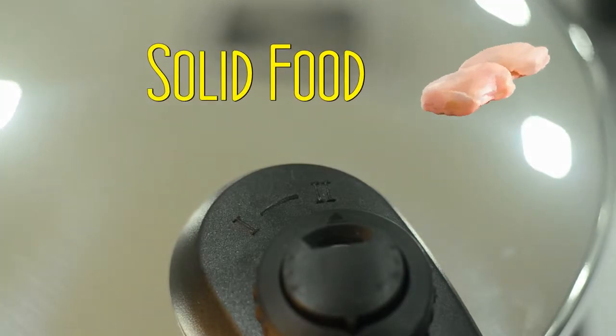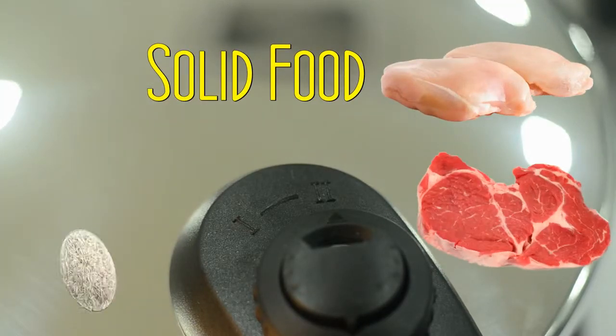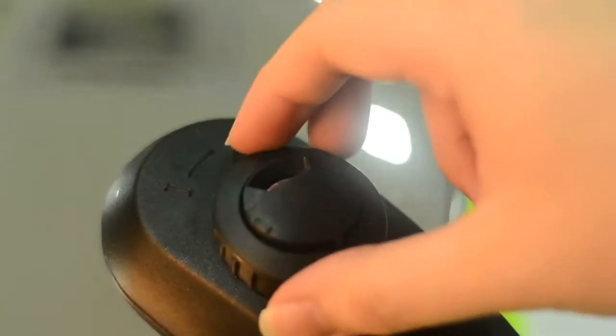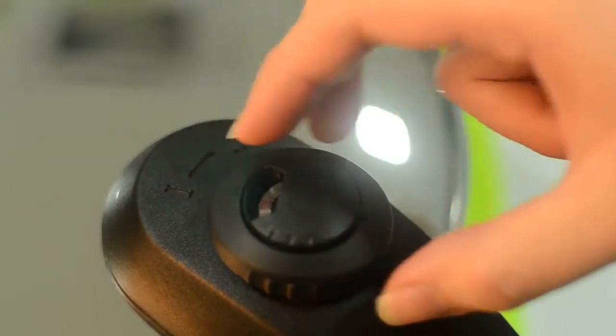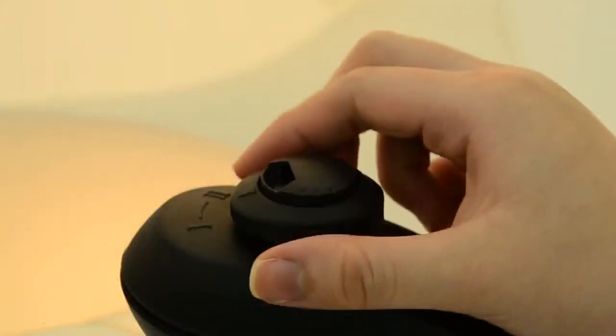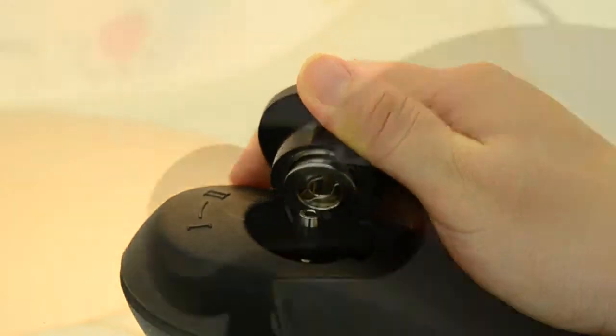Position 2, which is high pressure, is normally for solid food like chicken, meat, grains, and beans. Position 1 is low pressure and suitable for food that is not too solid like seafood. The valve is removed if you are steaming food.